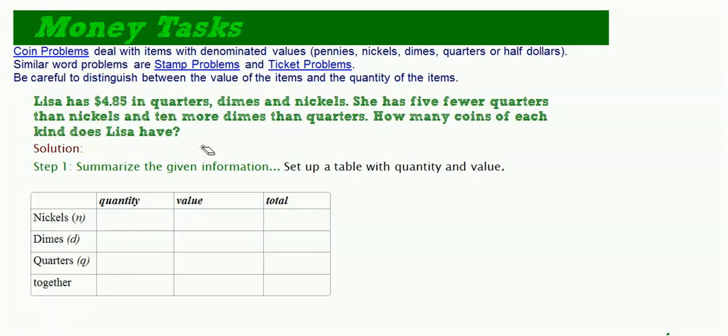So we just want to be really careful to, when we summarize especially, to distinguish between the value of your items and the quantity. You definitely need to use your good labeling. We're going to try to use a little table to keep us a little organized.